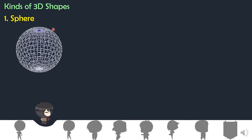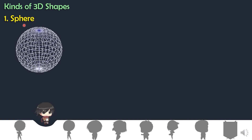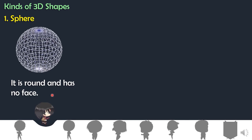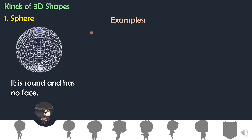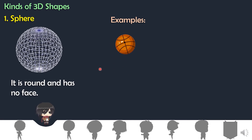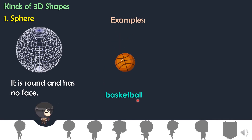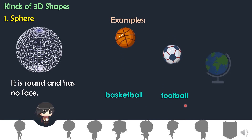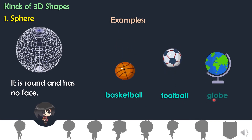First we have sphere. Everybody say sphere. It is round and has no face. The examples of spheres are basketball, football, and globe.